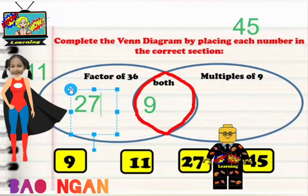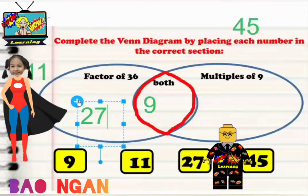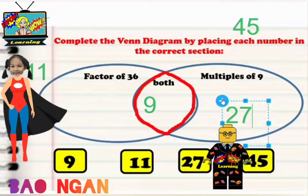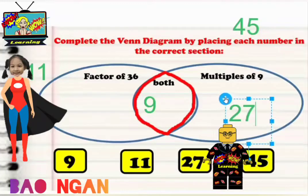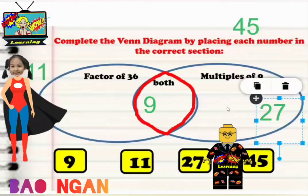27. Is 27 a factor of 36? No, you cannot have a factor. No, it's too big. Is 27 a multiple of 9? Yes, because 3 times 9 equals 27. So we put that there in multiples of 9.